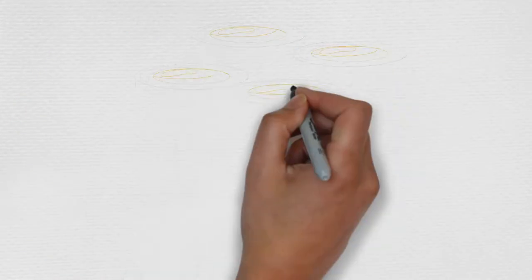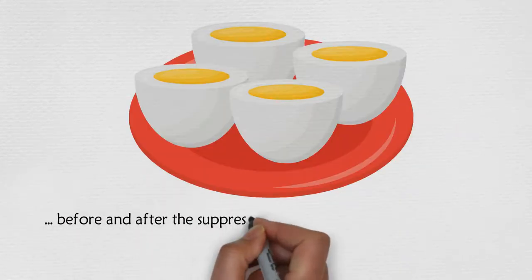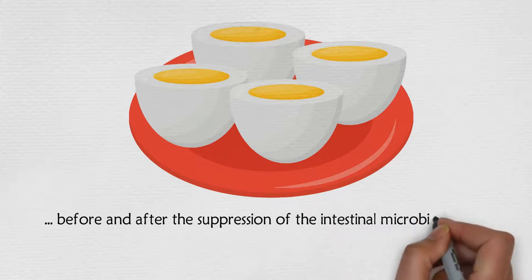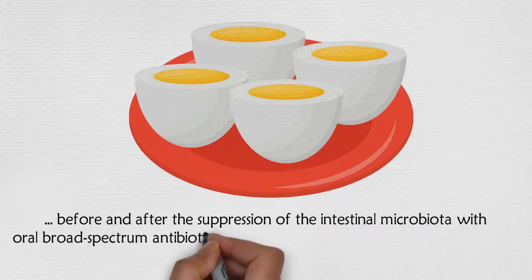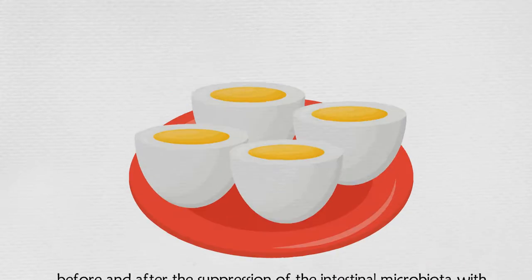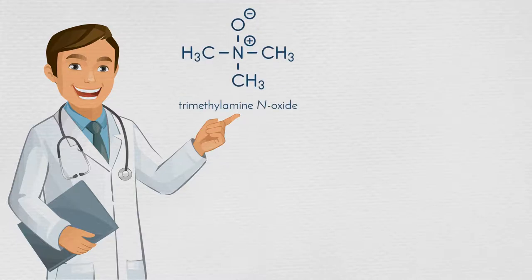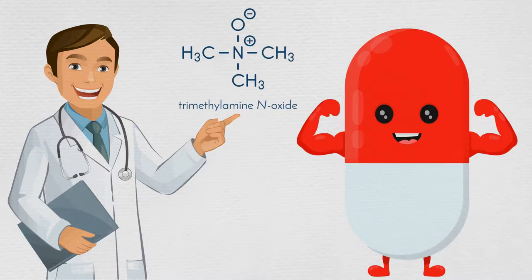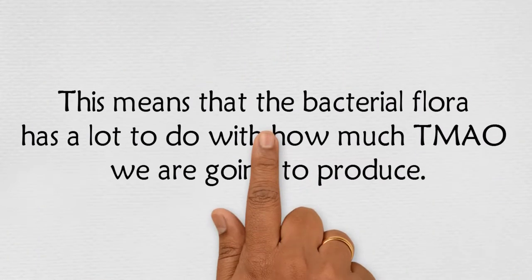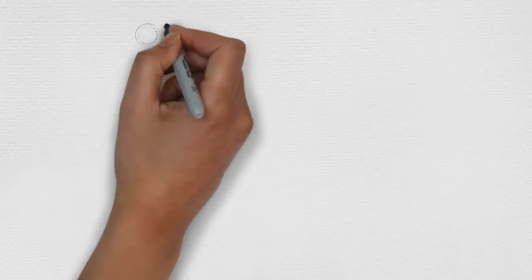They also had healthy people ingest two hard-boiled eggs before and after suppression of the intestinal microbiota with oral broad-spectrum antibiotics, to see if bacterial flora made a difference in detected TMAO levels. The researchers found that TMAO levels were markedly suppressed after antibiotic administration and then reappeared after withdrawal, meaning bacterial flora has a lot to do with how much TMAO we produce.